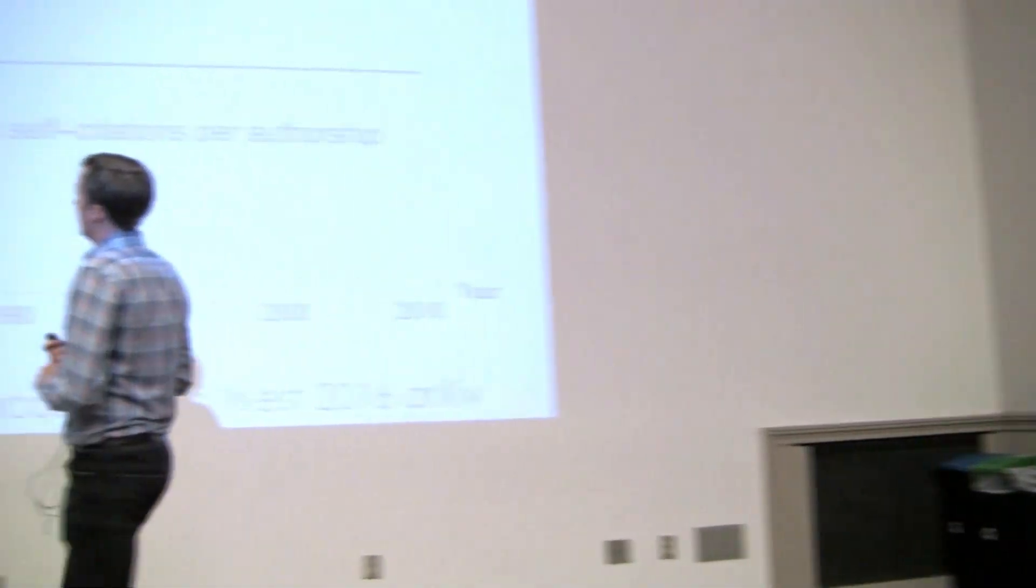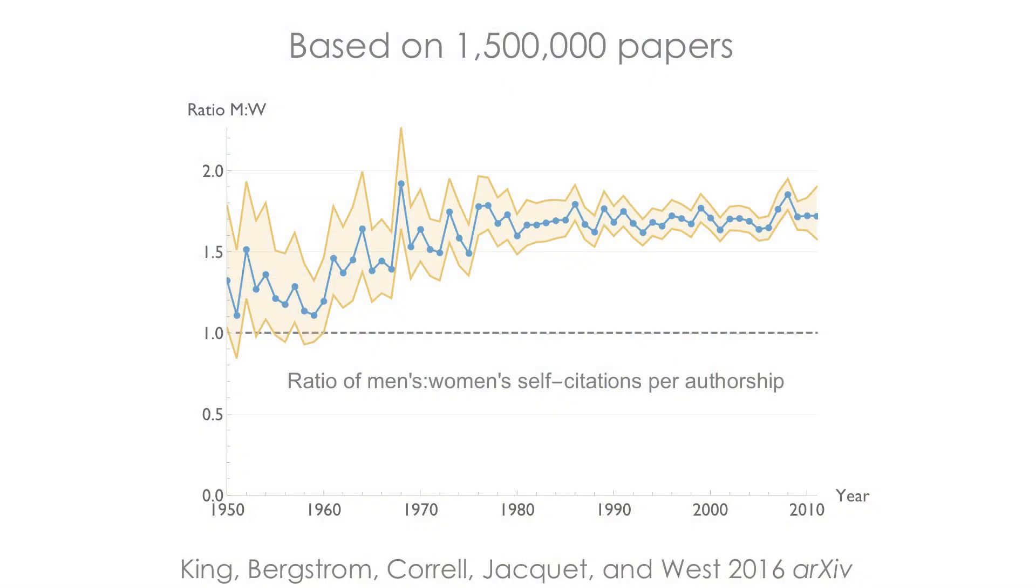So I just want to give you one example of how you can practice multiple working hypotheses, coming up with alternative hypotheses. This was a paper that Carl and colleagues of ours wrote around gender bias in academics.